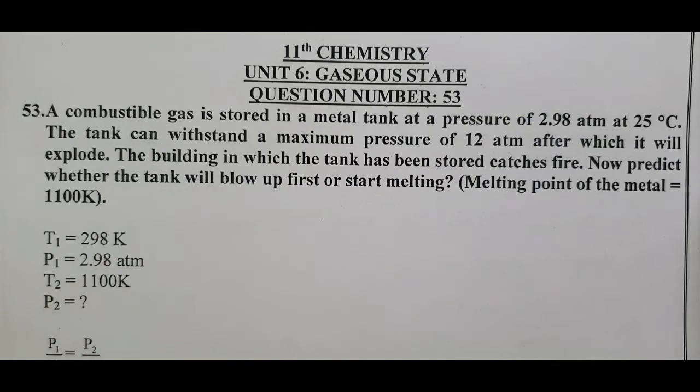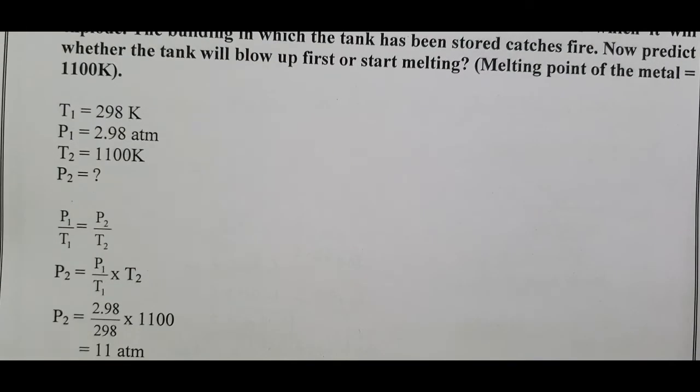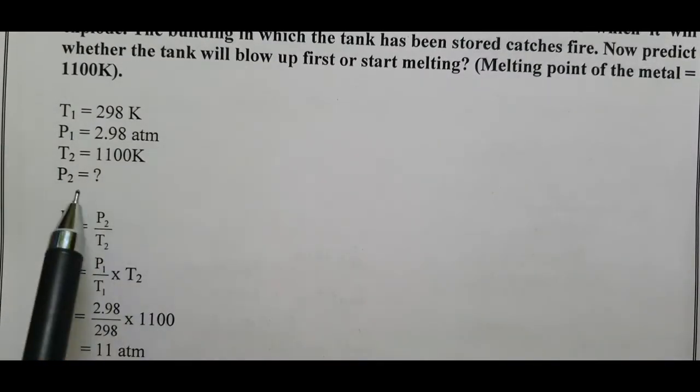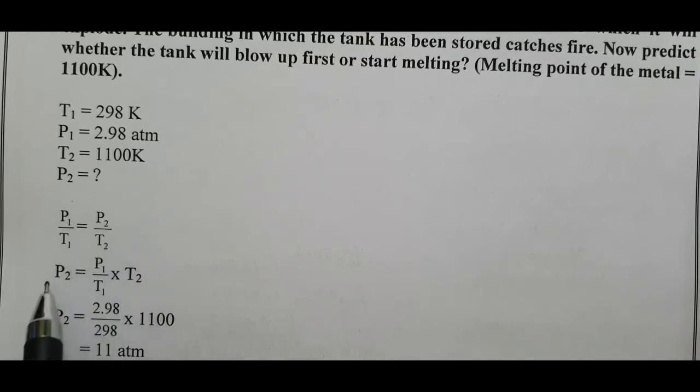T1 equals 298 Kelvin and P1 equals 2.98 atm. T2 equals 1100 Kelvin. We have to calculate P2. P1 by T1 equals P2 by T2, or P2 equals P1 by T1 times T2.